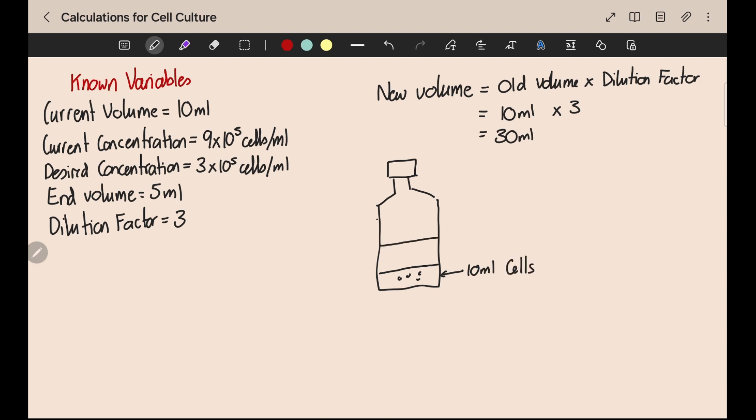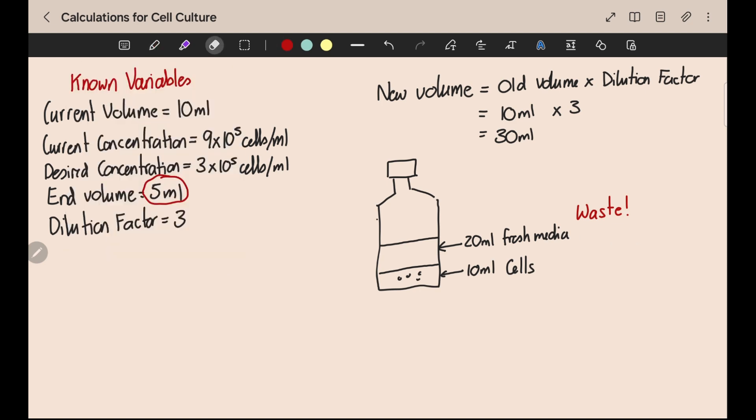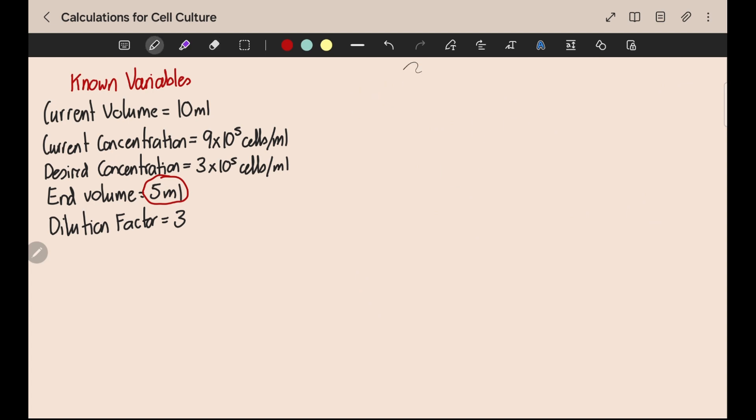However we said in our example that we only want to subculture into a small flask which only holds 5 mils. Therefore it would be a waste to make up 30 mils of cells and then throw most of them out. So instead we're only going to make the amount we actually need, which is 5 mils. So the question is how much of our current cell suspension do we need and how much fresh media do we add on top?